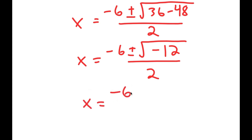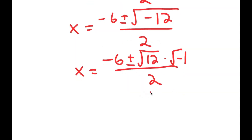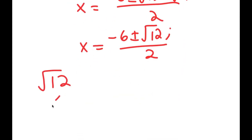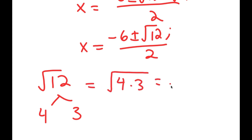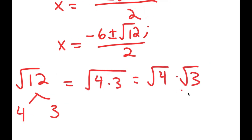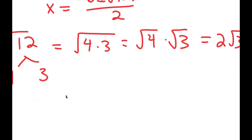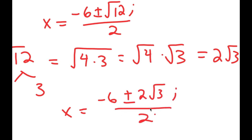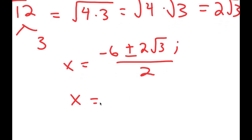From here, I get negative 6 plus or minus the square root of 12 times the square root of negative 1. The square root of negative 1 is the imaginary number i. So I get x equals negative 6 plus or minus √12 · i, over 2. Now √12 is the same as √4 times √3, which equals 2√3. So I get x equals (negative 6 plus or minus 2√3 · i) over 2. Dividing each term by 2, I get x equals negative 3 plus or minus √3 · i.